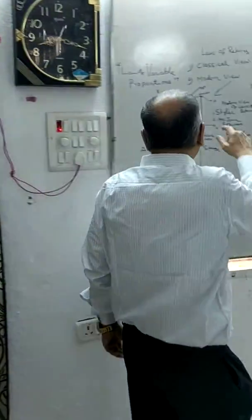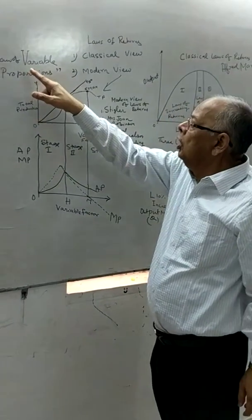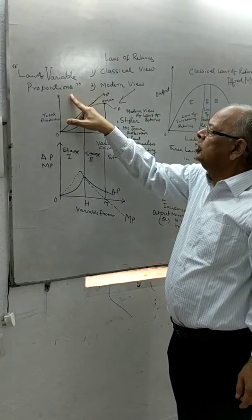Nobel Prize-winning economists Paul Samuelson and Stigler were in favour of establishing the modern version of the laws of returns, known as the law of variable proportions.